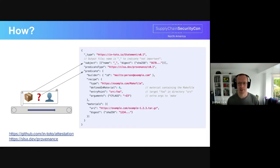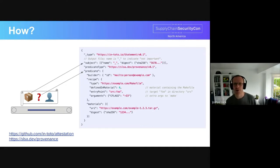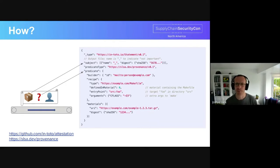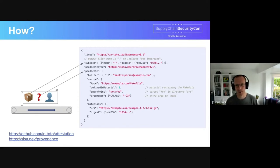The standard SLSA attestation, which captures information about adherence to SLSA requirements, is the SLSA provenance format, and you can see that on the screen here. A provenance attestation captures information about the artifact, the builder that generated it, the recipes used to generate the artifact, and additional materials that contributed to the artifact. Provenance attestations, in an ideal world, will be published alongside the associated software so that those making use of the artifacts can do automatic verification.